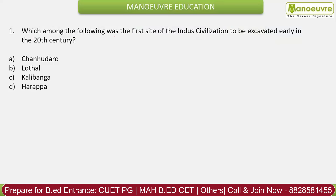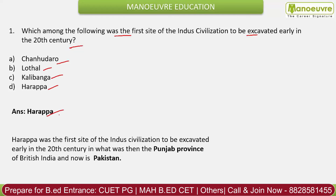Question 1: Which among the following was the first site of the Indus Civilization to be excavated early in the 20th century? The options are Chanhudaro, Lothal, Kalibanga, or Harappa. The answer is Harappa.